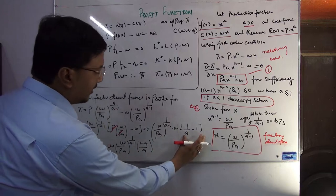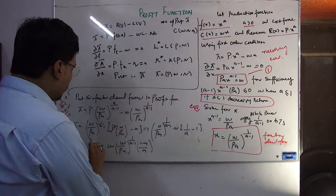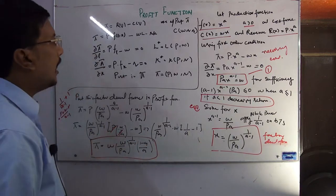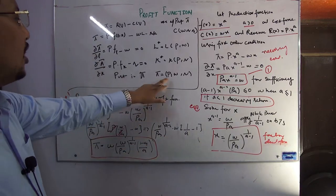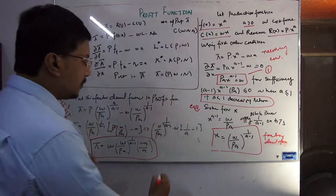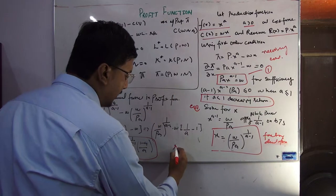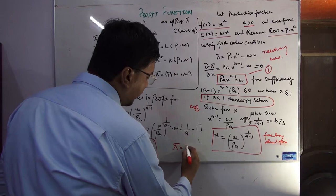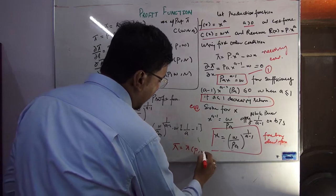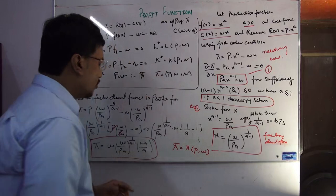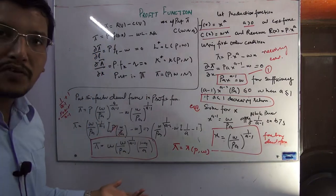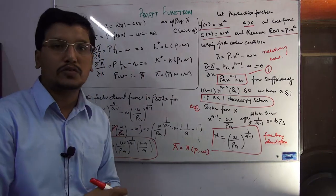So the profit function is expressed in terms of the output price and input price. Since we are using only one input, the profit function is a function of output price p and input price w: π = π(p, w). We have successfully calculated the profit function.